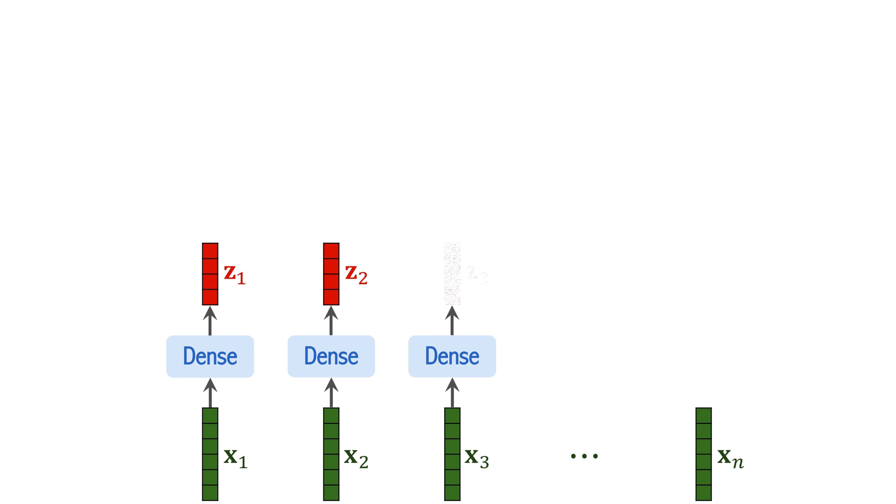Apply the same dense layer to all the vectors x1 to xn. The outputs are z1 to zn. The dense layers have the same parameter matrix w and parameter vector b.